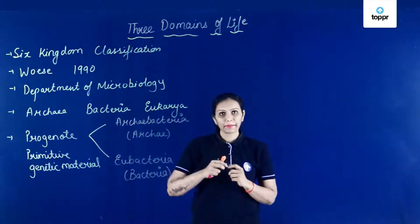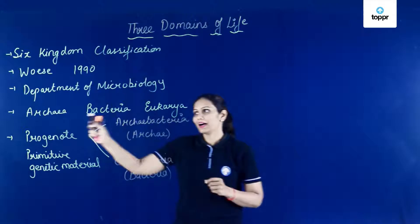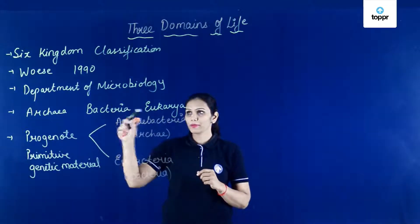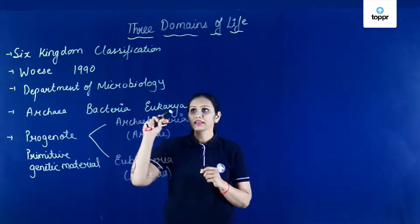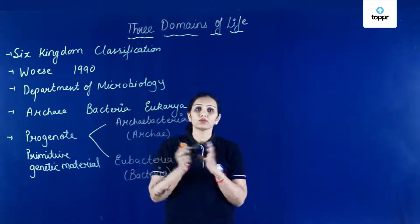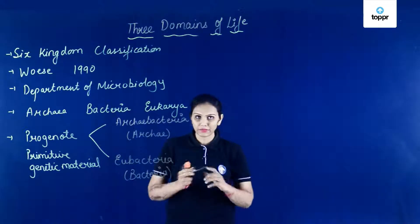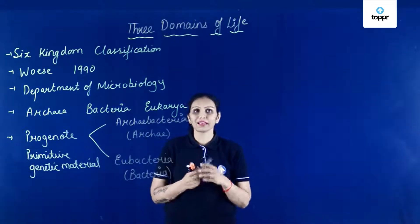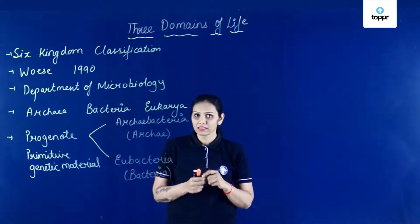Inhone separate kar diya Archaea ko, Bacteria ko jahan pe monerans rakhe. And Eukarya ke andar unhone baaki sare forms rakhe. Aur five kingdom classification system se alag kiya.